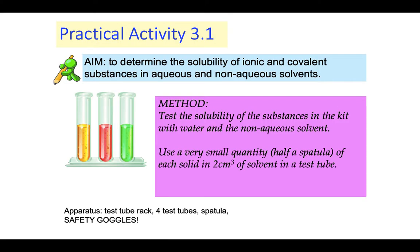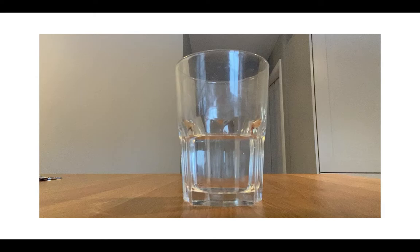If we were in class we would be taking part in a short practical activity. Your aim would be to determine the solubility of ionic and covalent substances in aqueous and non-aqueous solvents. An aqueous solvent would be water and non-aqueous solvents would be a liquid or a solvent that's not water. We would be taking a very small quantity, potentially half a spatula of each of our solids and adding that to about two centimeters cubed of solvent in a test tube. Unfortunately we can't do that at the minute but what we are going to do is watch a really short video of Miss McPherson attempting to do a very brief version of this experiment in our kitchen.